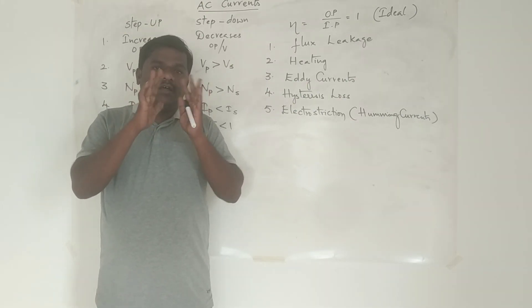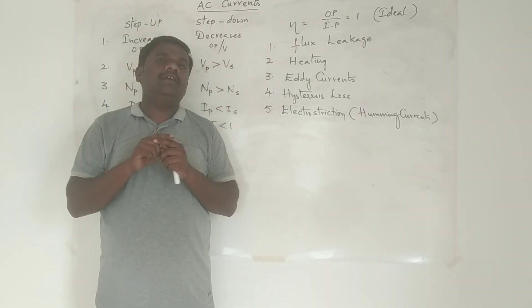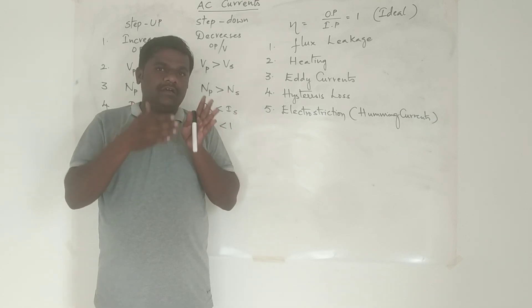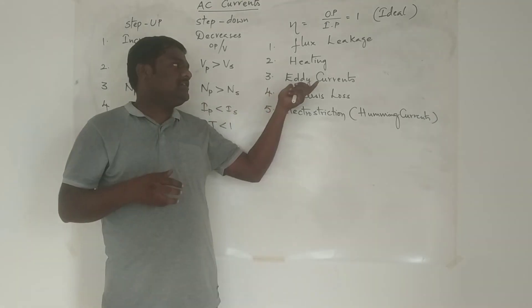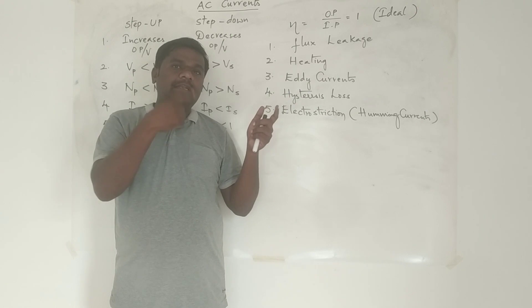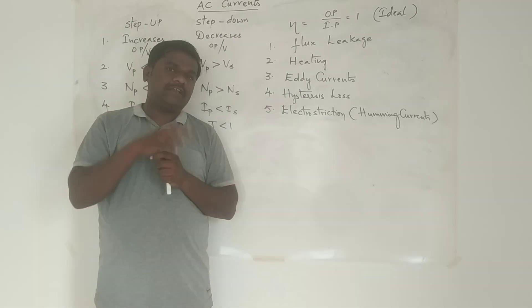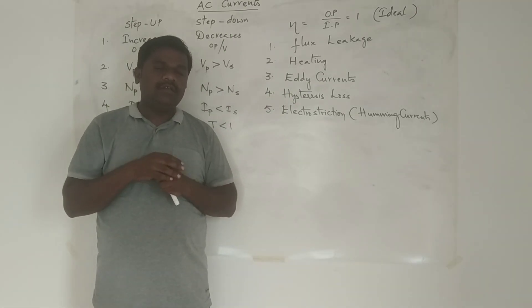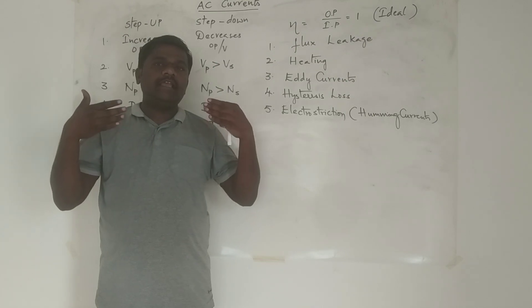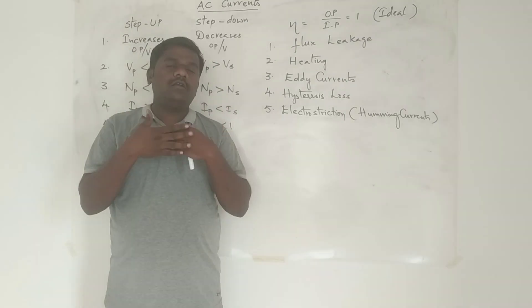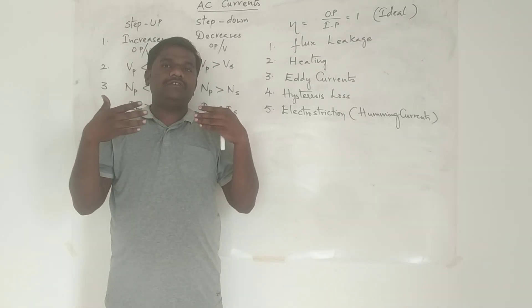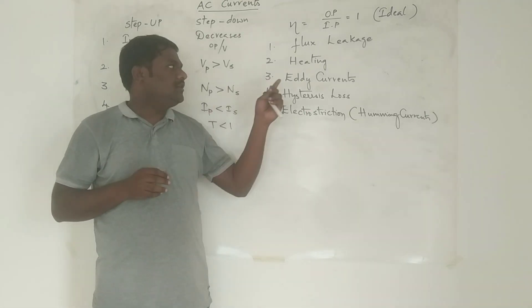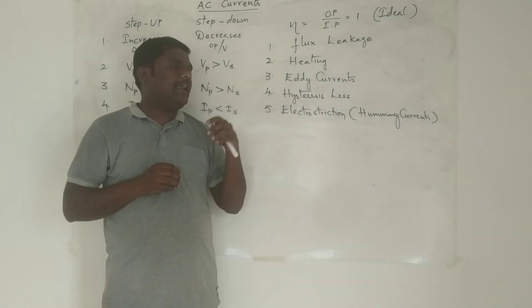The third cause is eddy currents. Since the core of the transformer is made of metal or metal sheets, some eddy currents will develop over the metal sheets due to the change in magnetic flux. This can be minimized by using a laminated core or a non-conducting type of core.